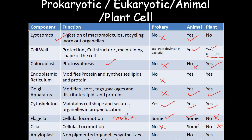The last organelle is amyloplast — a non-pigmented organelle that synthesizes and stores starch granules. It is not present in prokaryotic cells or animal cells; it is only present in plant cells. So these were the differences between prokaryotic and eukaryotic cells, with eukaryotic cells further divided into plant and animal cells. This gives a complete brief of the previous two videos.